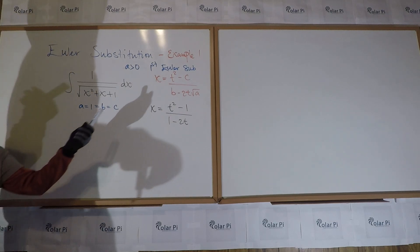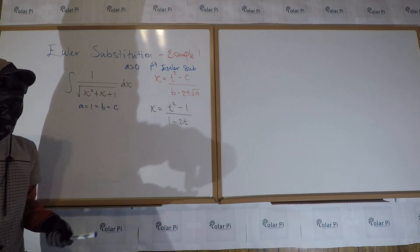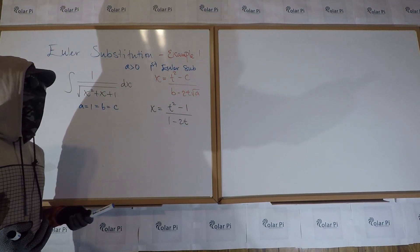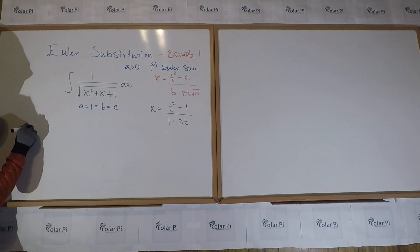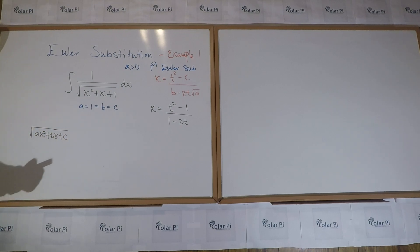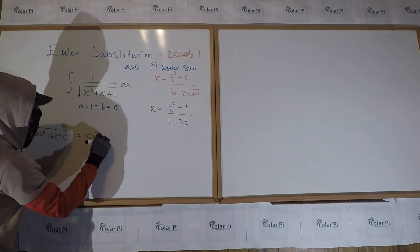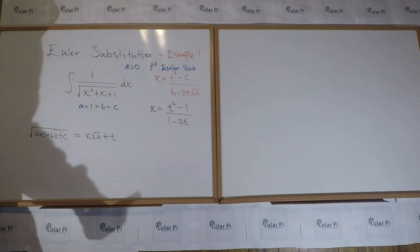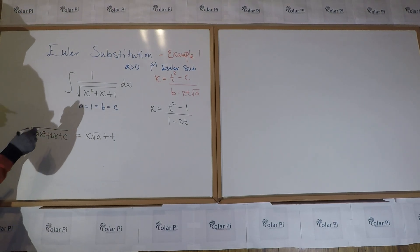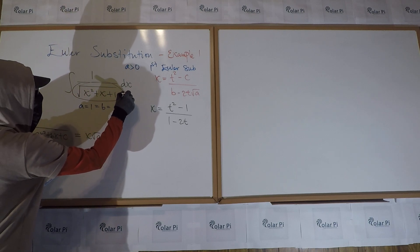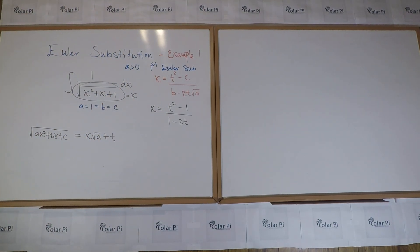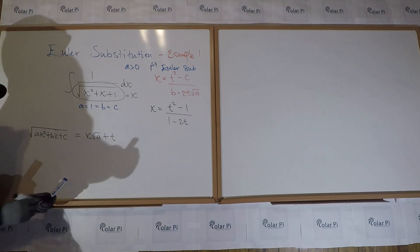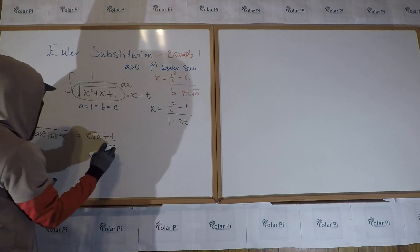Now, the way we got to this X T relationship here is we said in example zero, that the very beginning of the Euler substitutions is to figure out what we should let the square root of AX squared plus BX plus C be in each situation. And the first Euler sub, what we said is we should let this here equal X root A plus T. In fact, it is by beginning here that we figure out what X should be in terms of T.